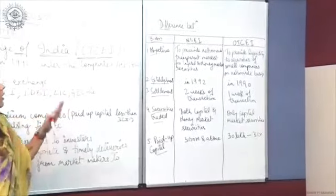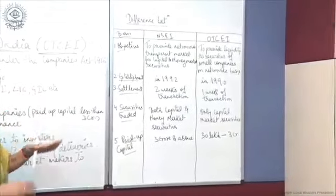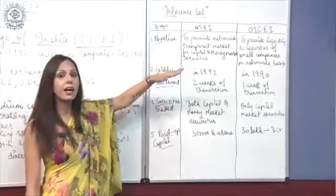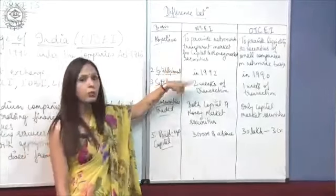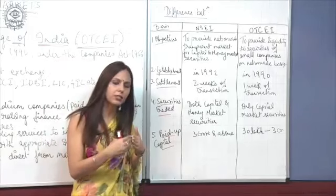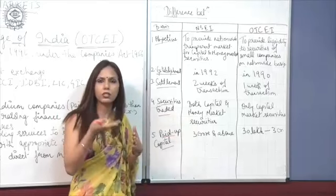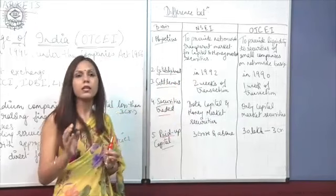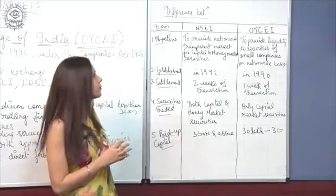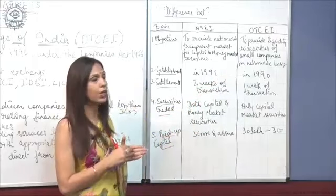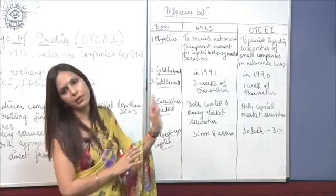Now let's look at the difference between NSEI and OTCI. The first basis of difference is the objective: the objective of NSEI is to provide a nationwide transparent market for capital and money market securities, whereas the objective of OTCI is to provide liquidity to securities of small companies on a nationwide basis.